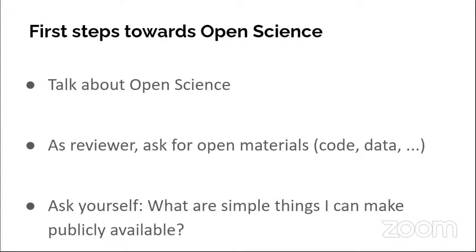I want to talk about simple steps we can take towards becoming open scientists — towards becoming real science champions. You've mentioned that it's sometimes not easy and people don't know how to do it. Being an open scientist is not binary — it's not either you are or you aren't. It's a scale, and you can take simple steps towards the top of that scale. This is not something where we have to learn everything at once.